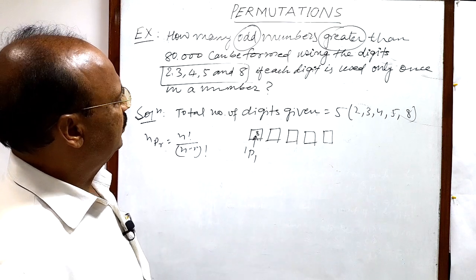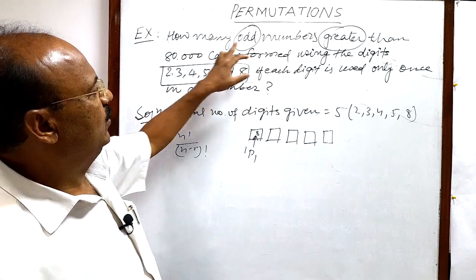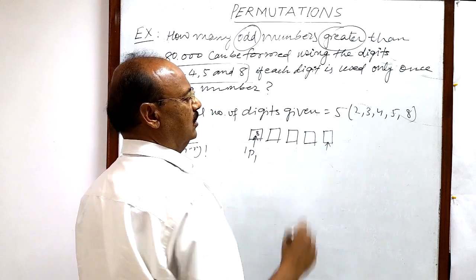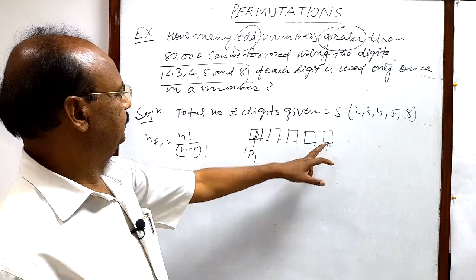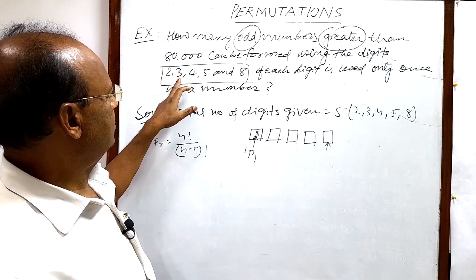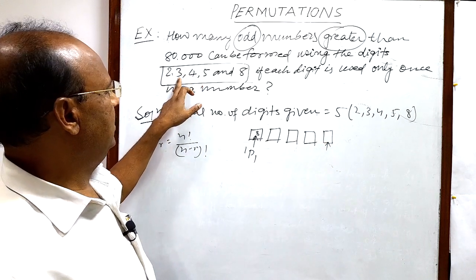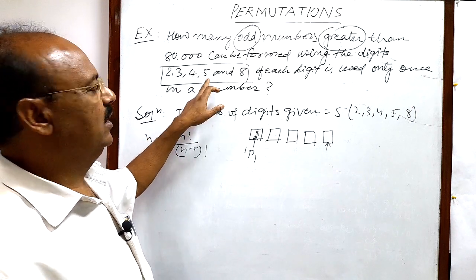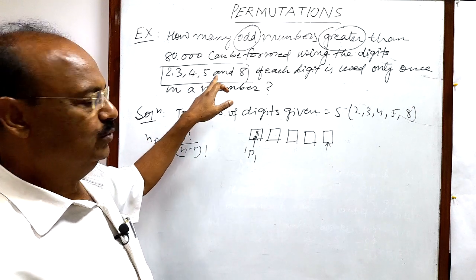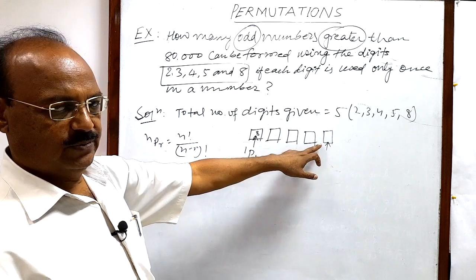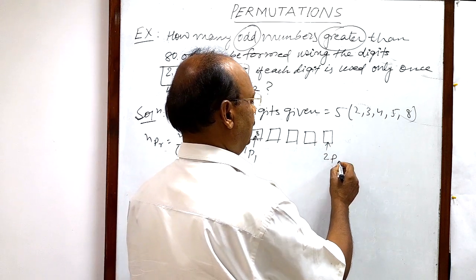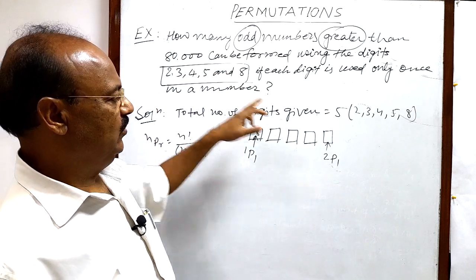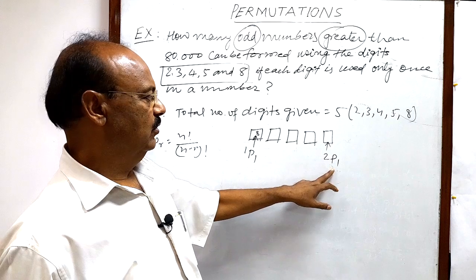The second condition we have to take care: that number should be odd numbers. Means here all the numbers should be odd numbers. It means we are having two options. One is 3, another is 5. So we have to choose any one out of these two for this place, units place. In how many ways? 2P1 ways. Out of these two, 3 and 5, we have to select any one for this place.